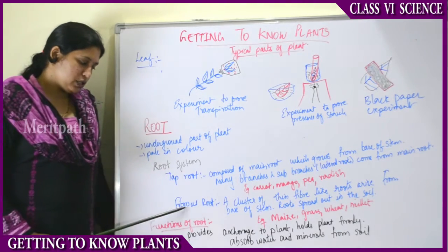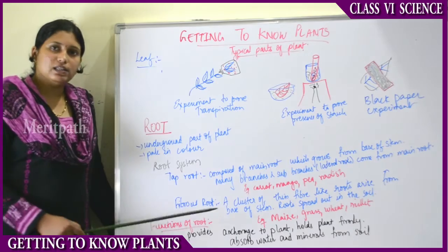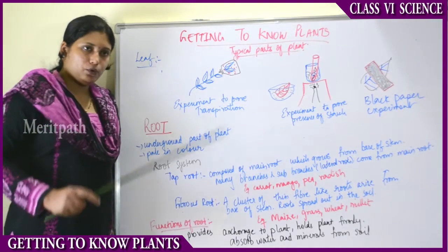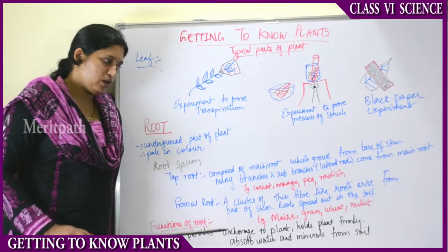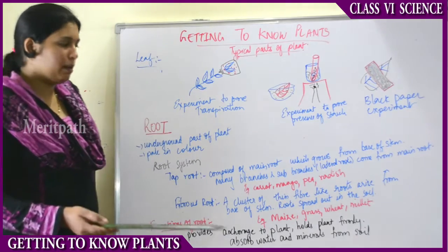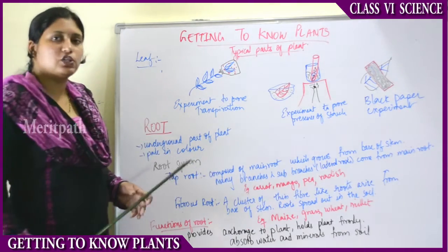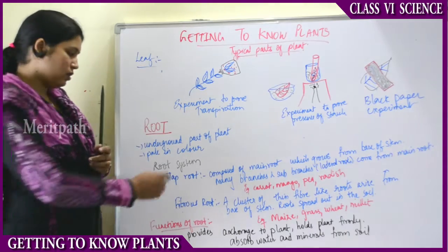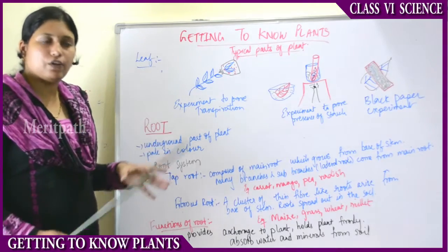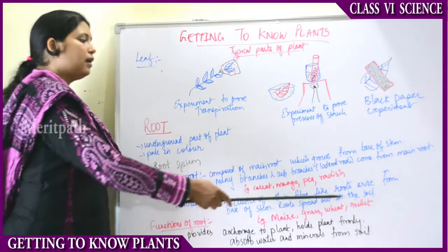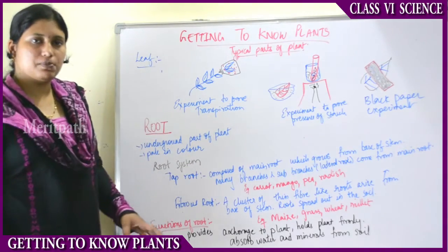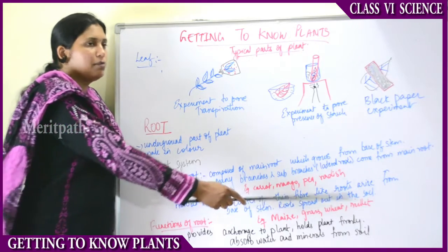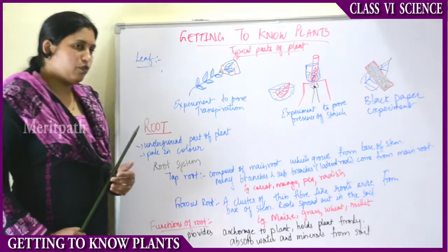In the fibrous root system, a cluster of thin fiber-like root structures arises from the base of the stem. In tap root a single main root arises, whereas in fibrous root a bunch of thin fiber-like root structures arises from the base of the stem. These clusters of fibers spread into the soil. You can see this in maize, grass, wheat, and millet plants.